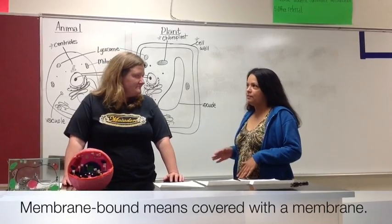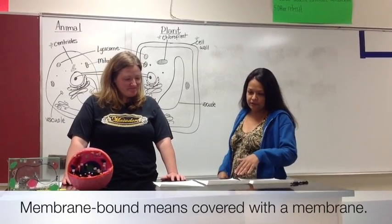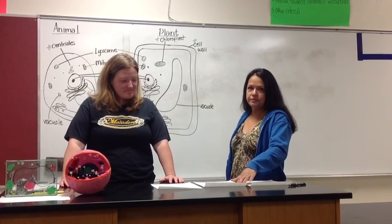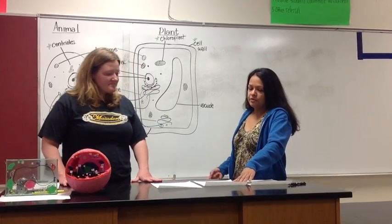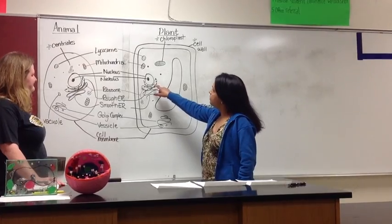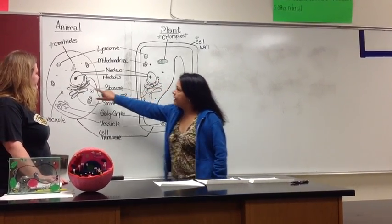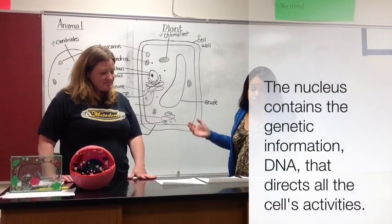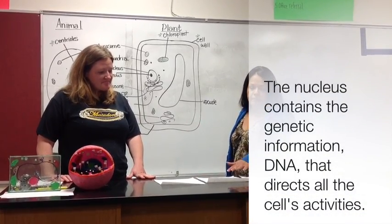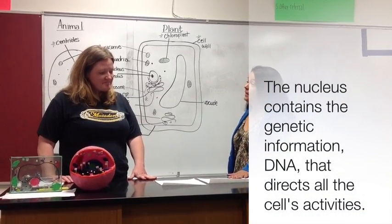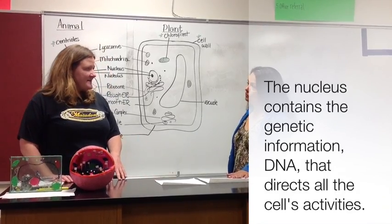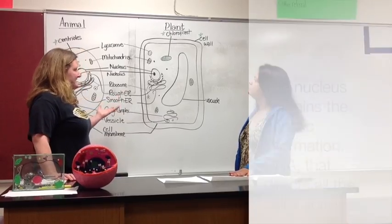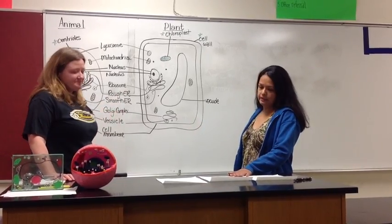Let me explain the function of these organelles. First, the nucleus — it's found in both the plant cell and the animal cell. The nucleus contains the genetic information, or DNA, that directs all of the cell's activities. Prokaryotic cells have DNA, but eukaryotic cells have it organized inside a nucleus, kind of like the boss's office.